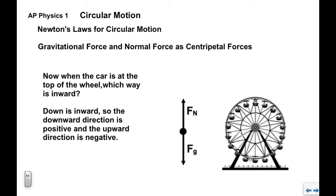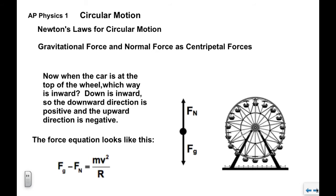When the car is at the top, we need to be careful about which way is in. When the car is at the top, down is the inward direction. So down would be positive and up would be negative because down is in and up is out. So when we write our centripetal force equation sigma FC equals MV squared over R, FG is positive because it's inward, FN is negative because it's outward, and then of course the right side is MV squared over R.